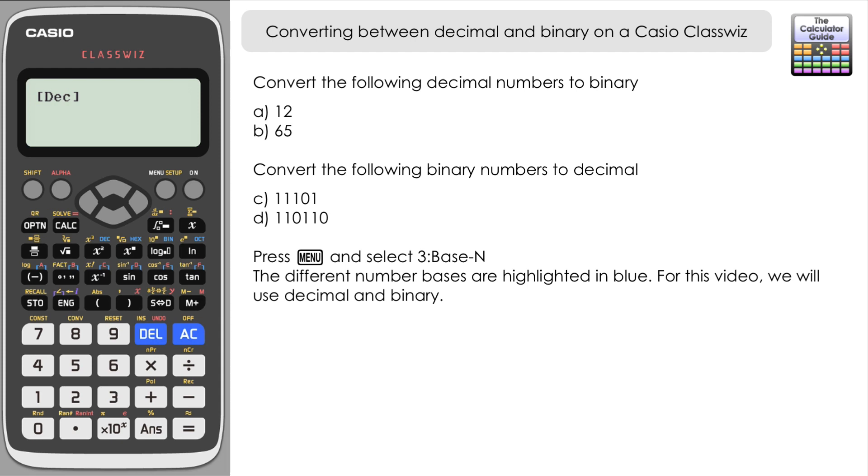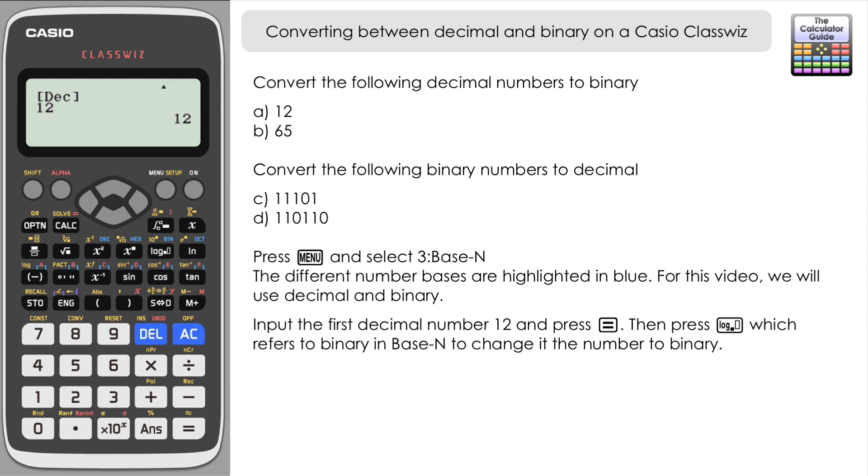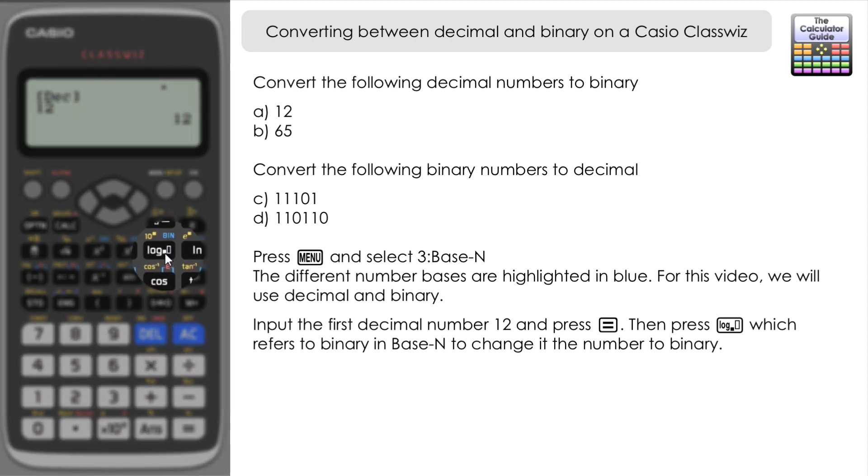Upon entering the mode, you can see it's set to receive decimal numbers, which is useful to start. We'll input the first decimal number, which is 12, press equals to make it the answer, and then press this button here. Under normal circumstances, this would be the log-to-any-base button.